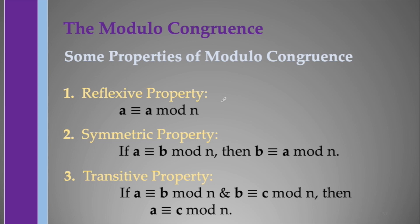Now let's have some properties of modulo congruence. The first is the reflexive property, which states that A is congruent to A modulo N — any integer A at modulo N will be congruent to itself. Next is the symmetric property, which states that if A is congruent to B modulo N, then B is congruent to A modulo N, showing that A and B are interchangeable.